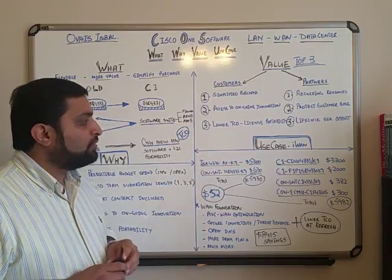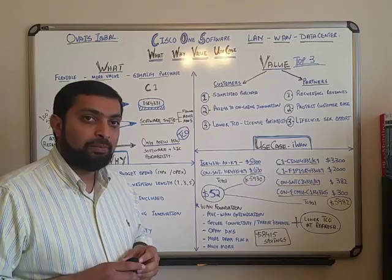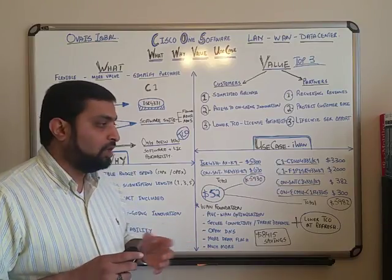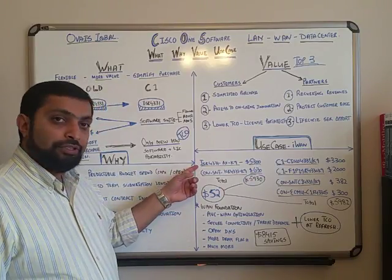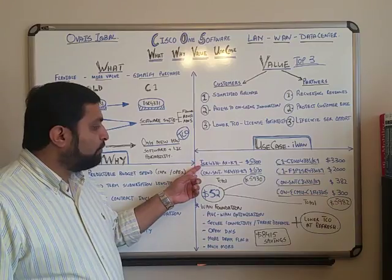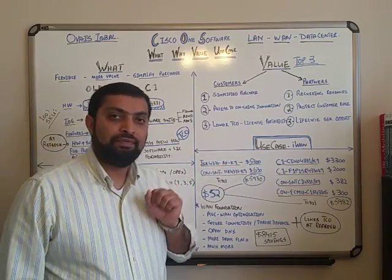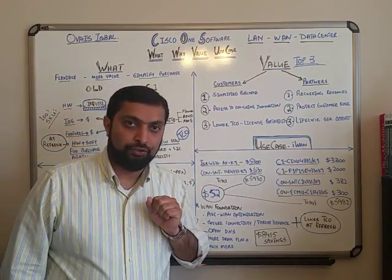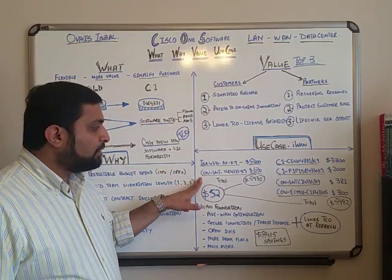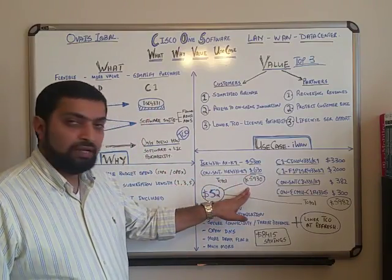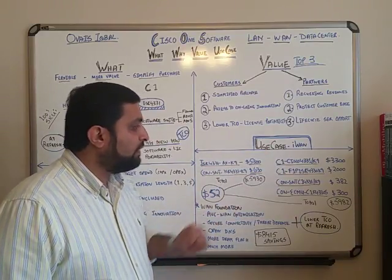Now, let's talk about the use case: branch Intelligent Wide Area Network, which is one of the hot topics. Let's say if I were to go the traditional route — if I buy ISR 4331 with the AX bundle, the price is $5,300 US. Then I add SmartNet at $630, so the total price comes to $5,930. Versus if I go the C1 route, I would still need to buy hardware — the hardware cost is $3,300.